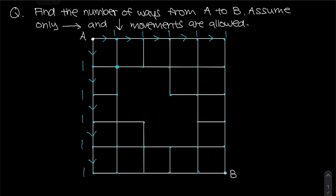That's because there's only one way from A to, say, the top-right corner — there are no other ways since you can't go back up. Now looking at the first interior intersection point, there are two arrows pointing to it. All we do is add up the two numbers that come before those arrows: one plus one gives us two ways to reach that intersection point.